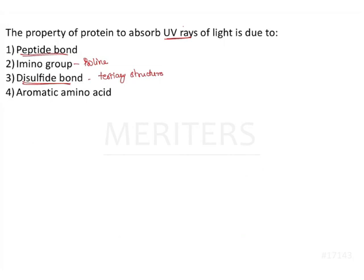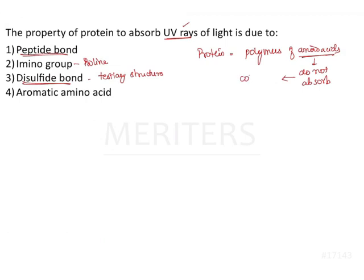The question here is: which property of the protein will absorb the UV rays of light? We have to note that proteins are made up of polymers of amino acids. Amino acids do not absorb visible light, and therefore these amino acids usually remain colorless.